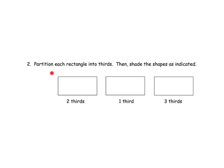Here it says partition each rectangle into thirds and then shade the shapes as indicated. So we have a rectangle and we're supposed to shade it into thirds — that's the first step. Let's cut it into thirds, and then we're supposed to shade in two of those thirds. I'll shade in this one and this one — so I've shaded in two thirds. Now let's do this one: cut it into thirds, then shade in one third. And lastly, cut this one into thirds and shade in three thirds — that's one third, two thirds, three thirds. When we shade in three thirds, you shade in the whole thing.